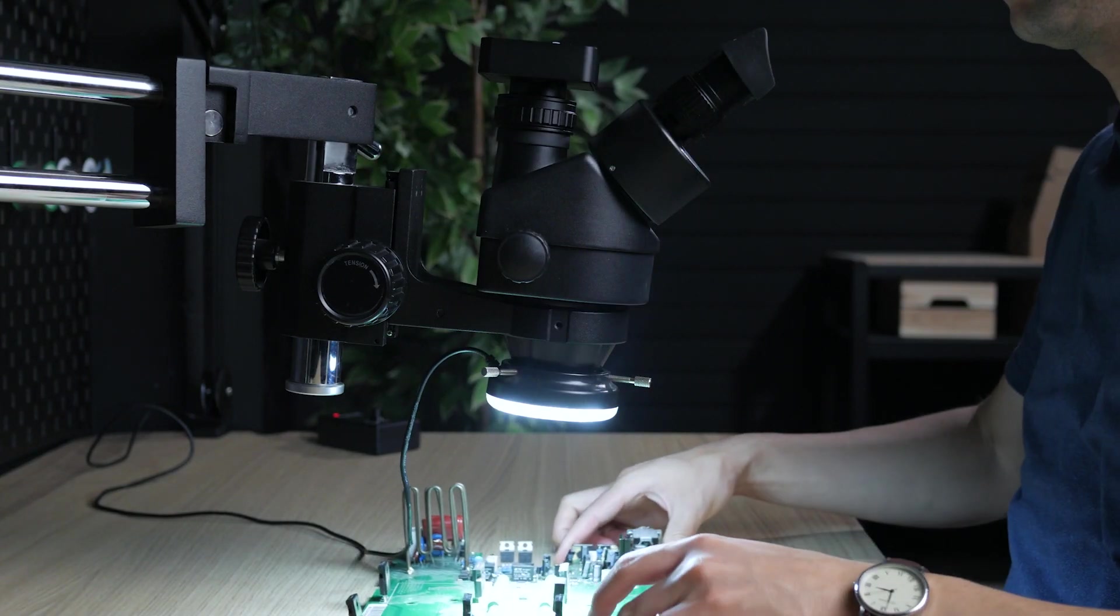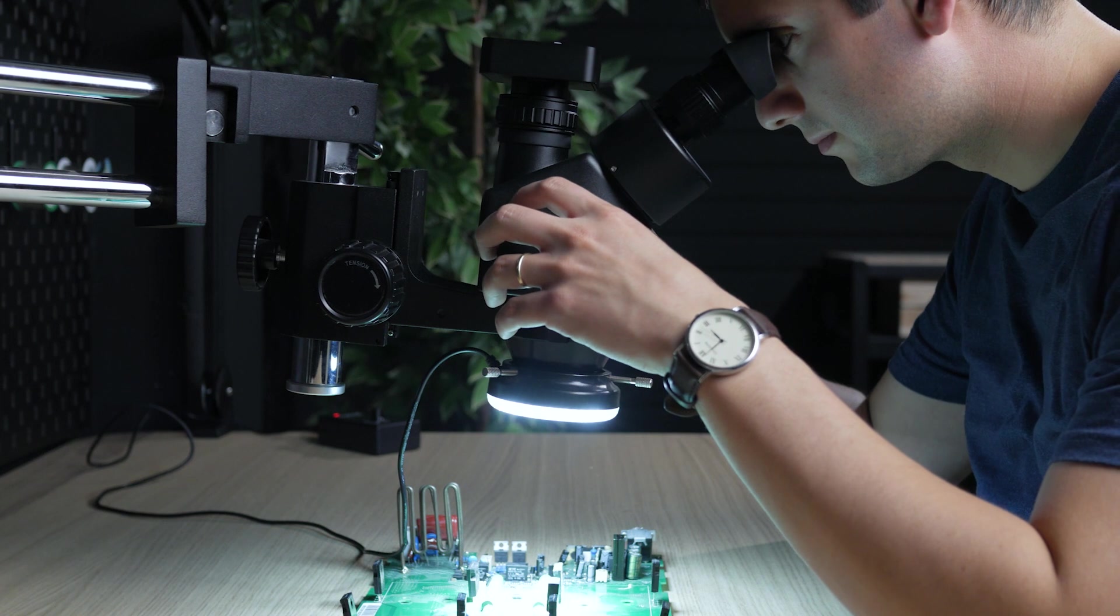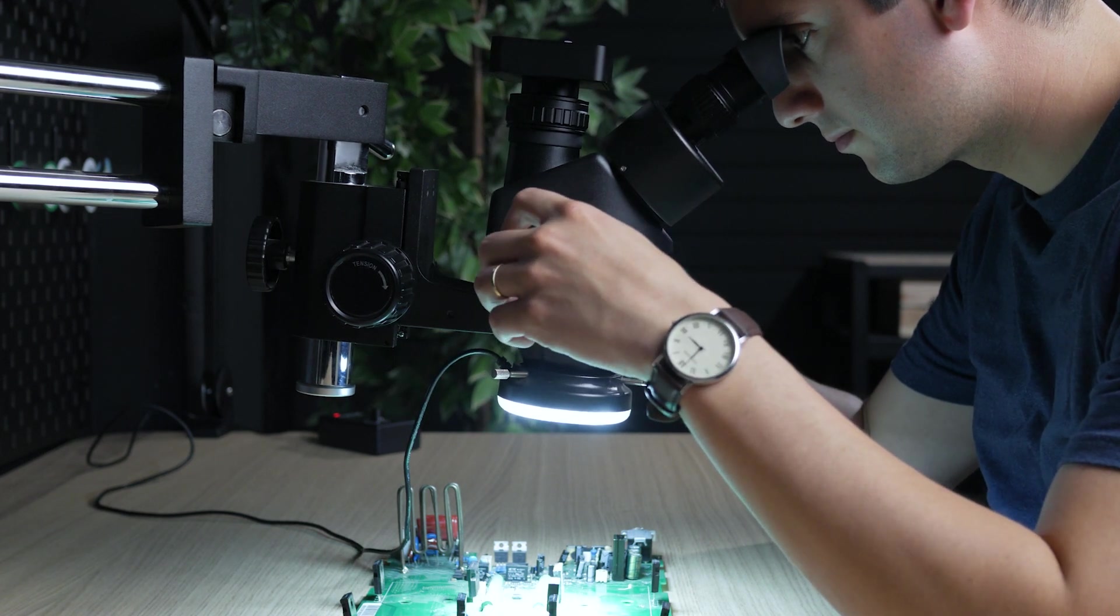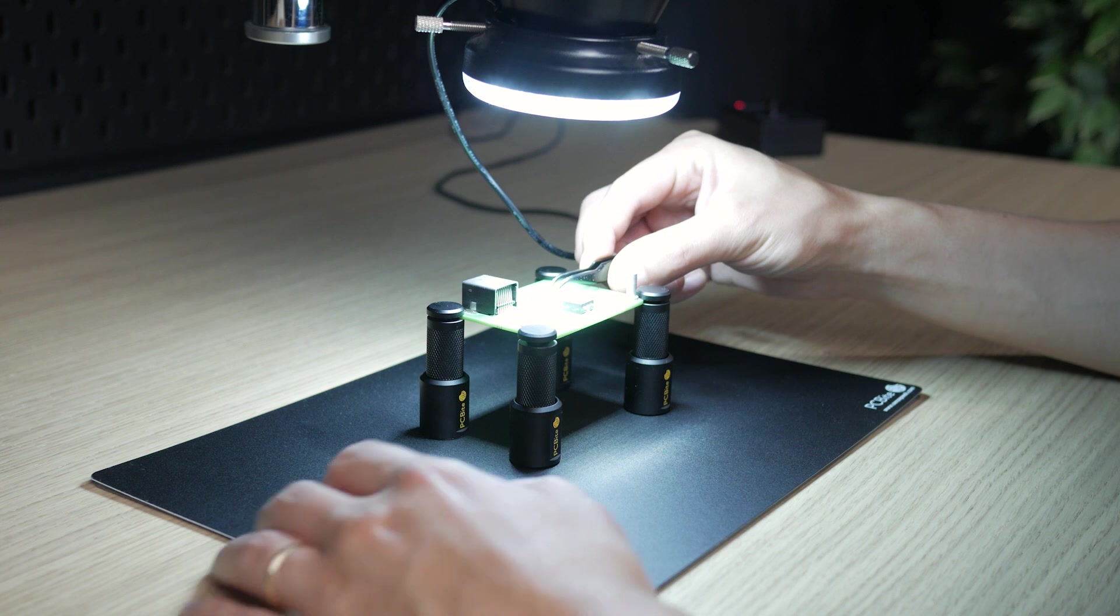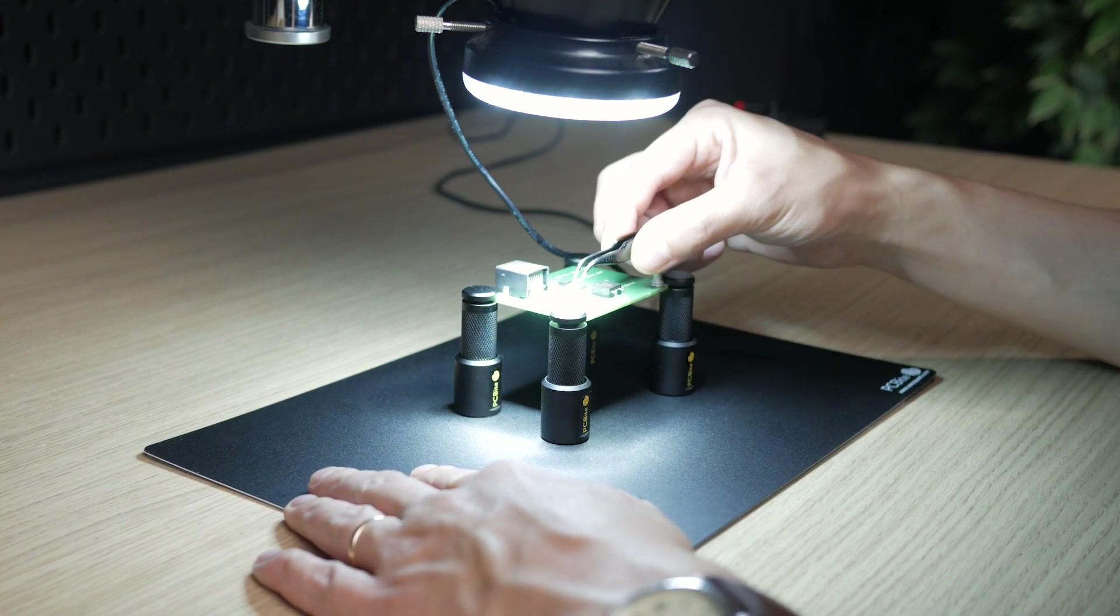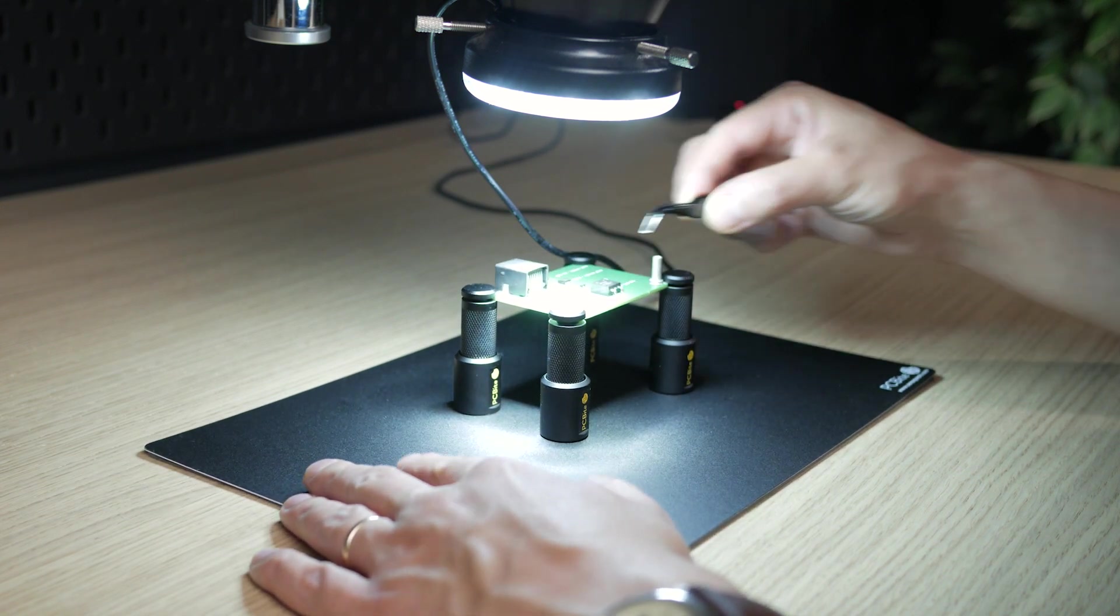You want enough horizontal working distance under your microscope for larger objects and to move your work around. This is why you should take the size of your objects you will be working on into account when getting something like a microscope. The vertical working distance needs to be large enough for maneuvering a soldering iron and other tools if you are planning on doing practical work.